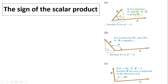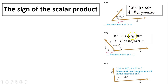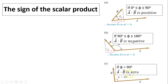If phi is between 0 and 90 degrees, A dot B is positive because cosine phi is greater than 0, or because B projected on A is positive. When phi is between 90 and 180 degrees, A dot B is negative because B projected on A is negative. If B and A are perpendicular to each other, the dot product is 0.